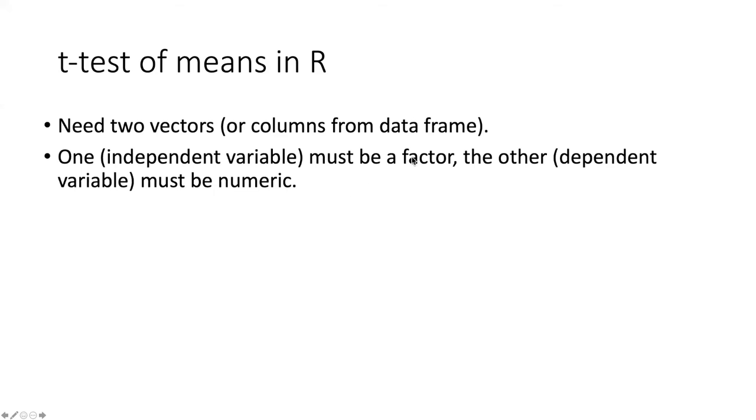One, the independent variable has to be a factor or converted into a factor. The other one, the dependent variable must be numeric. And it must be organized in the form of tidy data. That is, the category data that is a factor has to be in a single column.